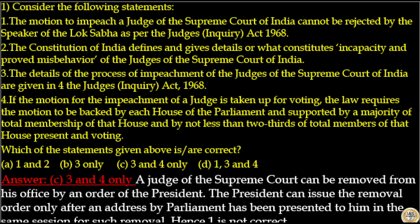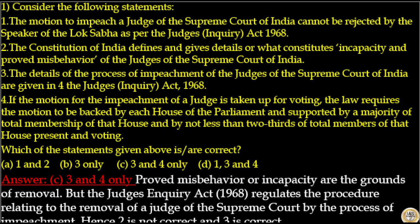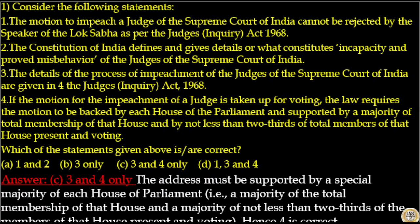A judge of the Supreme Court can be removed by an order of the President. The President can issue the removal order only after an address by Parliament has been presented to him in the same session for such removal. Hence statement 1 is not correct. Proved misbehavior or incapacity are the grounds of removal, but the Judge's Inquiry Act 1968 regulates the procedure relating to removal by the process of impeachment — hence statement 2 is not correct and statement 3 is correct. The address must be supported by a special majority: a majority of total membership of that house and no less than two-thirds of members present and voting. Hence statement 4 is correct. The answer to this question is option C.